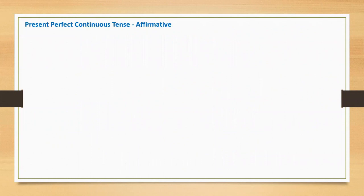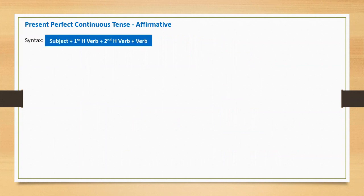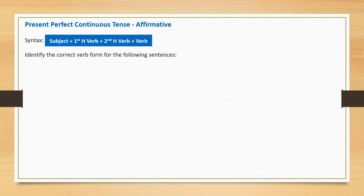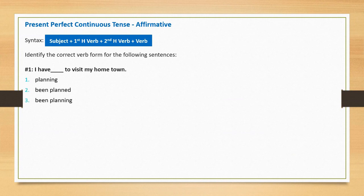Now I will walk you through the assessment of present perfect continuous tense. Let's begin with affirmative sentences. The syntax is: subject plus first helping verb plus second helping verb plus main verb. Sentence one: 'I have blank to visit my hometown.' Options: planning, been planned, been planning. Correct option: been planning. Full sentence: 'I have been planning to visit my hometown.'